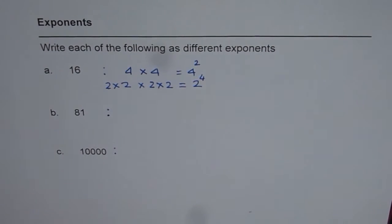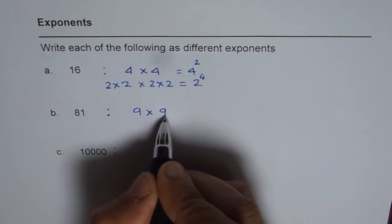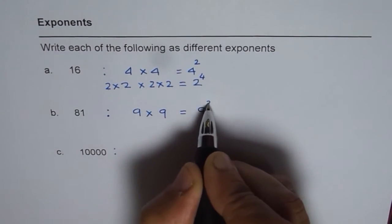Here is how I will do it. 81 is what? 81 is 9 times 9. So I can write this as 9 squared.